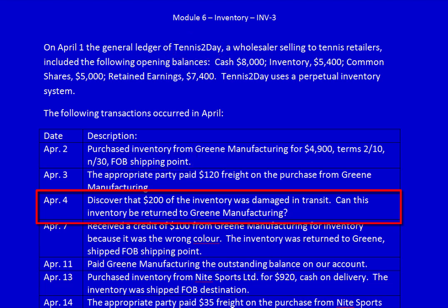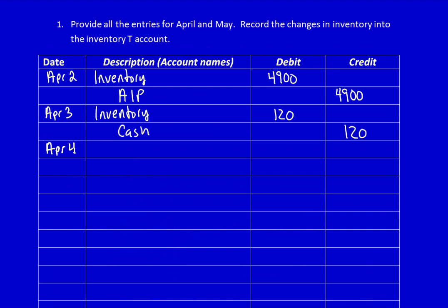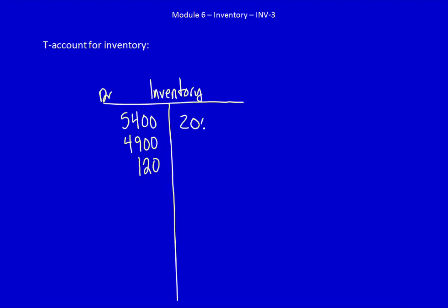Do we have to do an entry on April 4th? Absolutely. Our inventory no longer has future economic benefit for those $200 — it's no longer saleable, so we have to write it off. We'll use an inventory losses account rather than cost of goods sold. Inventory losses is an operating expense because it's part of the cost of doing business. We got a loss due to inventory damage and got rid of the inventory. Update the T-account: credit inventory $200. We had to record this because of the shipping terms.